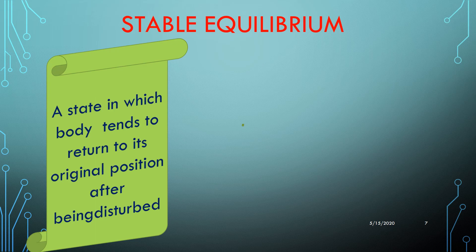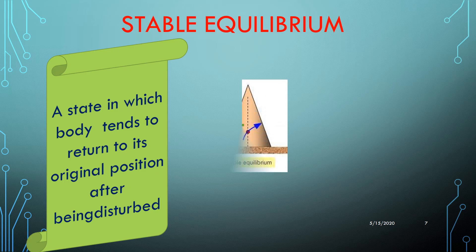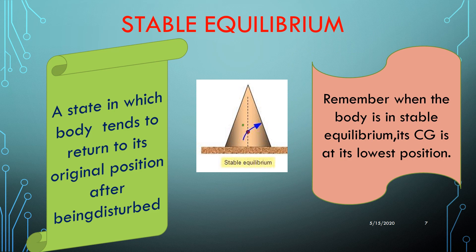Stable equilibrium is the state in which a body tends to return to its original position after being disturbed. When a body is in stable equilibrium, its center of gravity lies at its lowest position. When it is tilted, the center of gravity rises, so it returns to its stable state by lowering the center of gravity. A body remains in stable equilibrium as long as the center of gravity acts through the base of the body. If the center of gravity on disturbance lies outside the base area, the body will be unable to maintain stable equilibrium.